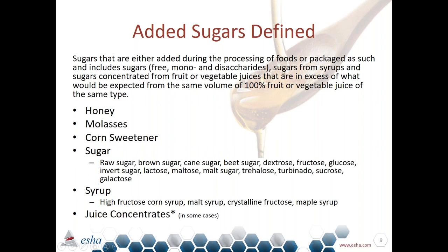The next part of the definition covers sugars from syrups, including honey, molasses, corn sweetener, high fructose corn syrup, and maple syrup. The third piece covers sugars concentrated from fruit or vegetable juices that are in excess of what would be expected from the same volume of 100% fruit or vegetable juice of the same type. That last part often trips people up, so we'll break down how to calculate added sugars when it comes to fruit juice concentrate.